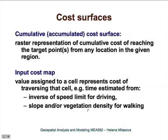In this section, we will talk about cost surfaces and their applications. First, we need to define cumulative cost surface. Sometimes in literature, you will find it called accumulated cost surface. It is a raster representation of cumulative cost of reaching the target point from any location in the given region, and there can be single target points or many of them.